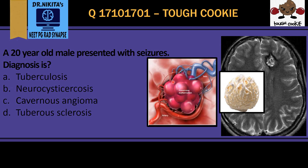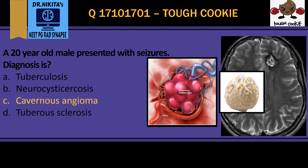Cavernous malformation has multiple locules which contain blood products of various ages, and it has a hemosiderin ring. So the correct answer is cavernous angioma — more precisely, cavernous malformation. It is very important to figure out how to identify this.